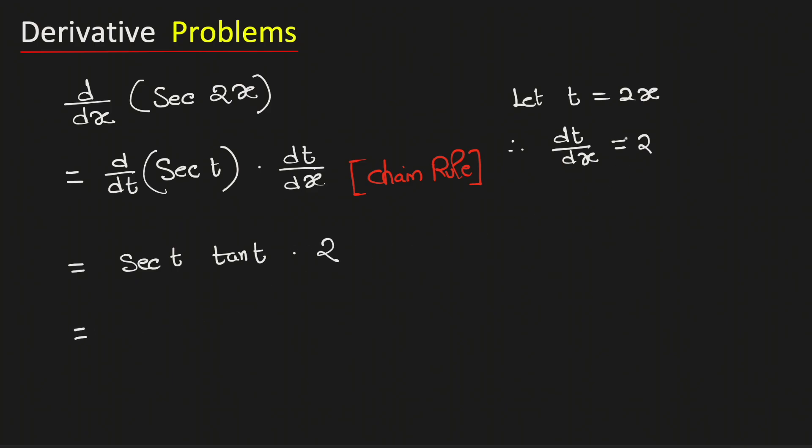Now if we put the value of t which is 2x, the derivative of sec 2x will be equal to 2 times sec 2x tan 2x. And this is our final answer.